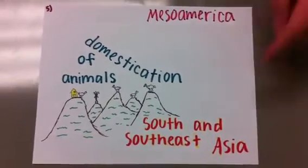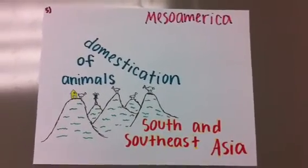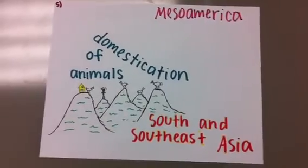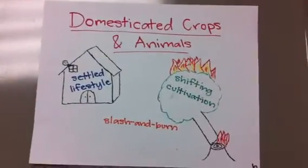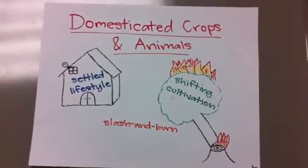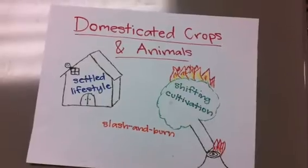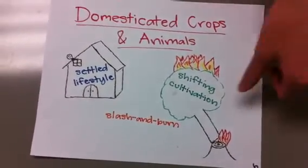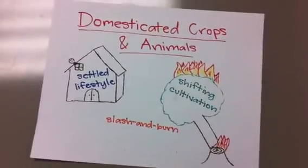South and Southeast Asia and Mesoamerica were also important parts of animal domestication. Animals were used for ceremonies, protection, shelter, milk, meat, and labor. With domesticated crops and animals, early humans were able to live a more settled lifestyle and utilize methods of subsistence agriculture such as shifting cultivation and slash-and-burn agriculture to grow crops.